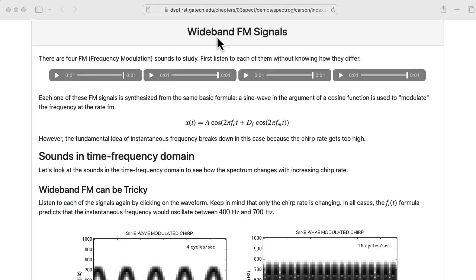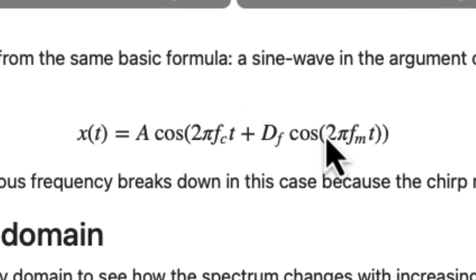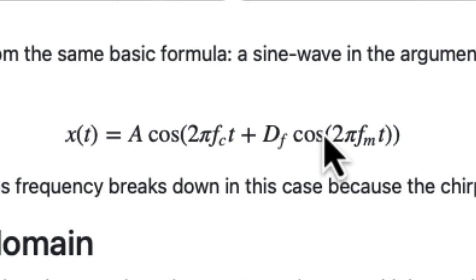Let's take a look at this page on wideband FM signals on the DSP First website. Here we have a formula implementing frequency modulation, although technically this is phase modulation. We're not adding a sinusoidal variation to the carrier frequency FC in here. We're leaving that alone, and we're adding the sinusoidal phase term. FC is the carrier frequency, FM is the frequency of modulation,